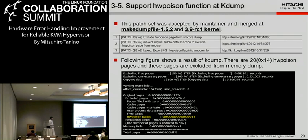This slide shows the kdump result. As you can see, certain page types are excluded from the kdump file — for example, pages filled with zero, cache pages, private pages, free pages, and I added hardware poison pages. This figure shows the kdump result: there are 20 hardware poison pages, these pages are excluded from the memory dump, and kdump succeeds.